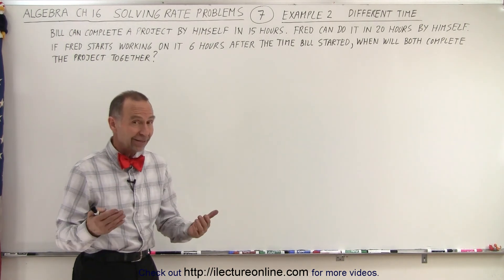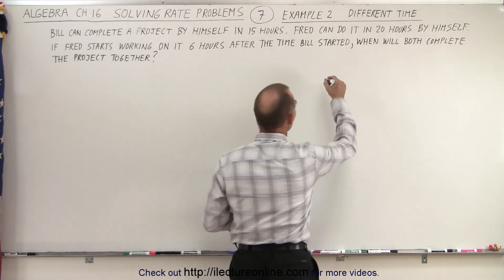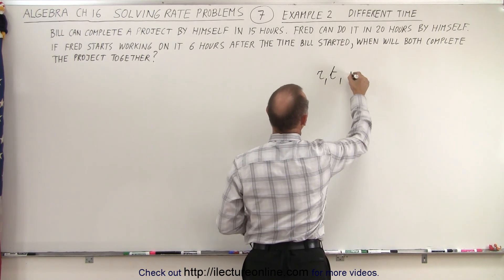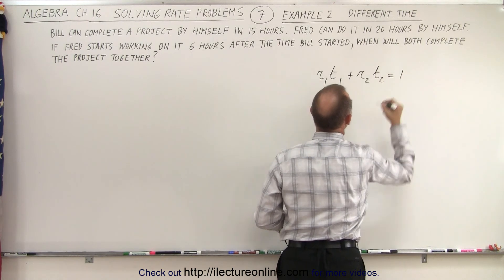So they have different rates and there's a different amount of time worked on it. So the equation becomes as follows. The rate by the first person times the time of the first person plus the rate of the second person times the time of the second person equals the whole job done.